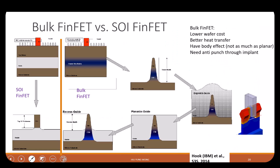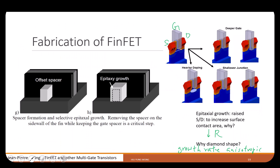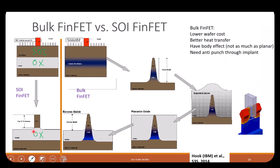There are two types of FinFET: bulk and SOI. The SOI FinFET has an oxide layer underneath — this is silicon on insulator. You pattern it to get the fin sitting on the oxide. The benefit of SOI is that you don't have a leakage path at the bottom, because even without the hard mask, the oxide isolates it and current won't leak from source to drain through the bottom.